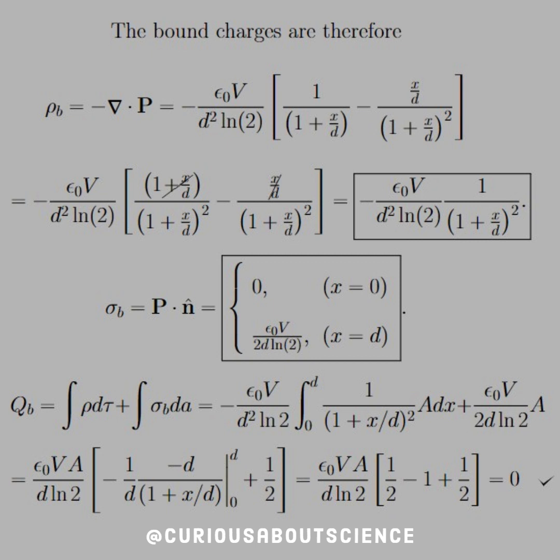But then we need to find that the total charge adds up to 0. So we have to take the volume integral and the surface integral, respectively. We see that since they're parallel plate capacitors, the area is just A, and that's why we use A there. So we can factor all those constants out. So we have to evaluate the integral of 1 over 1 plus x over d squared.